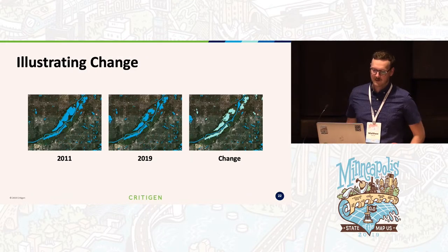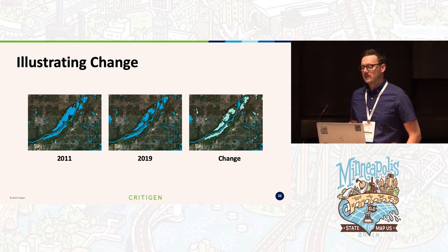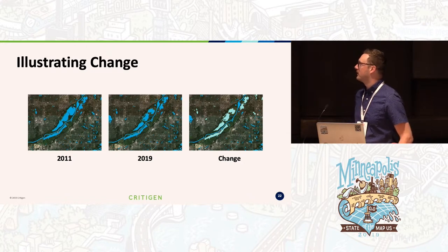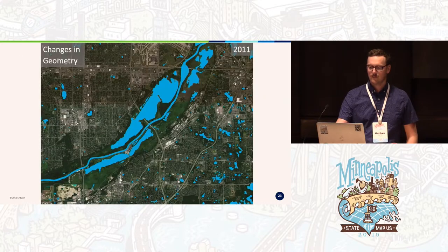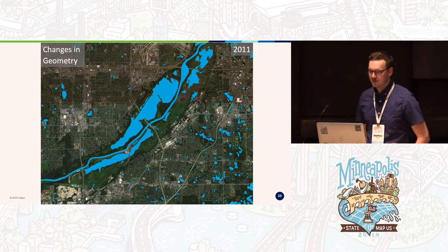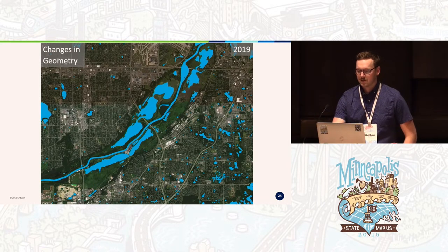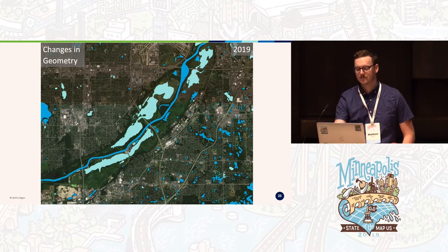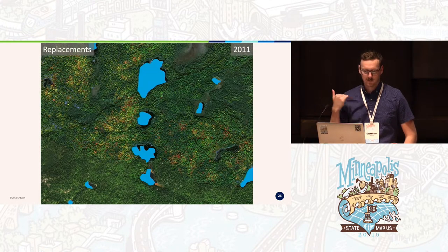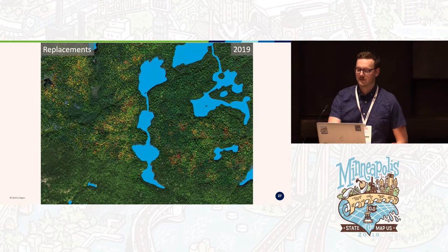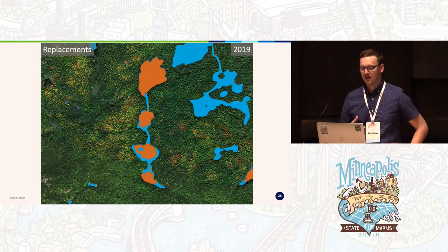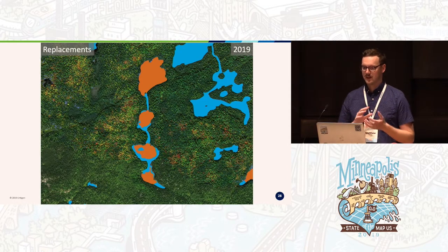For the next few slides, we'll show a time series analysis. The first image for each set shows 2011 features, the second shows 2019 features, and the third shows features classified as change for each use case. We'll start with changes in geometry: here are features in 2011, here in 2019, and finally features classified as having changes in geometry. Next, replacements: these are features with new OSM IDs that are geographically very similar to features that are no longer present.